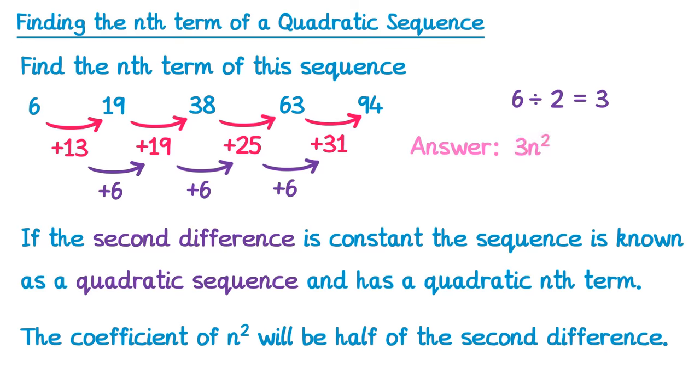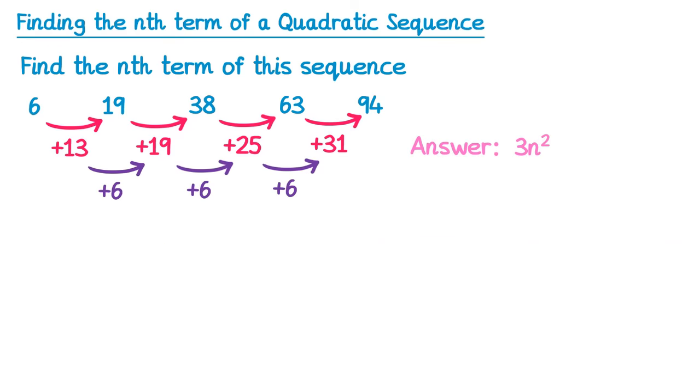Sadly, we aren't finished yet though. If we were to substitute n for 1, we should get the first term, so 3 times 1 squared. But this just gives 3. Our sequence begins with 6 though, so this can't be the whole story.